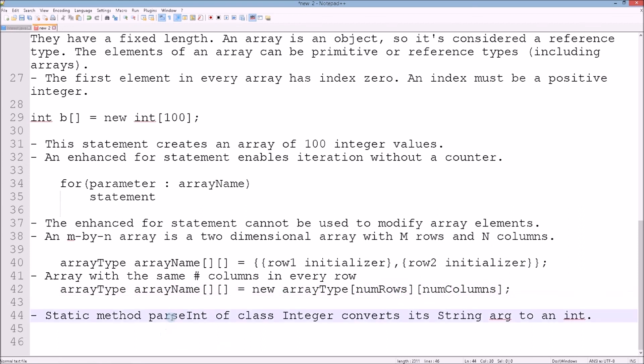We also have a static method parseInt of class Integer that converts its string argument to an integer. That's everything for this theory review folks. In the next episode we're going to start picking the pace up and doing some interesting programs.